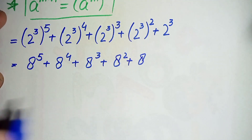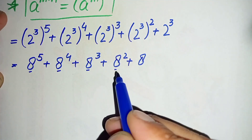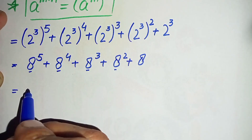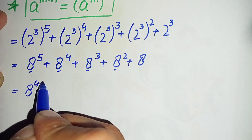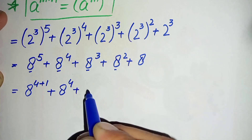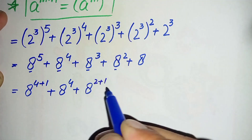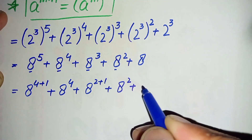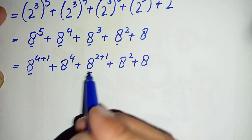In the next step, we make the powers of adjacent terms the same. We split: 8 raised to power 5 as 8 raised to power 4+1, and 8 raised to power 4 stays. Then 8 raised to power 3 as 8 raised to power 2+1, plus 8 raised to power 2, plus 8.